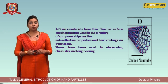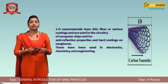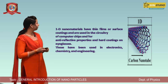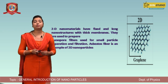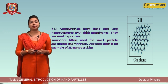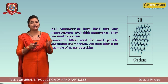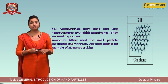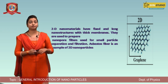Carbon nanotube is an example of a 1D nanoparticle. Now, 2D nanoparticle — when a nanoparticle is structured so that only two dimensions remain, such as x-y, y-z, or z-x, we call it a 2D nanoparticle. For example, graphene.